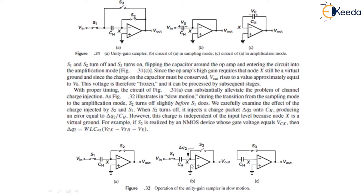As shown over here, S2 turns off, so it injects a charge packet del Q2 onto this CH which produce an error equal to del Q2 by CH. However, this charge is independent of the input level because node X is a virtual ground.